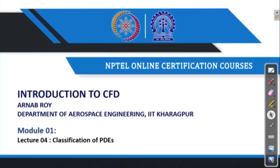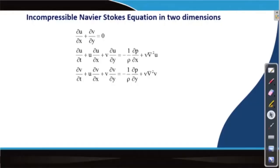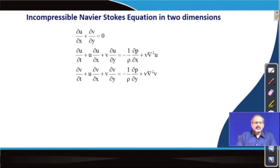In this lecture we are going to look at classification of partial differential equations, but before we discuss that we will have a quick look at the incompressible Navier-Stokes equations which we could not complete during the last lecture. You can see the two-dimensional incompressible Navier-Stokes equations on the screen — they are comprised of mass conservation and momentum conservation equations.